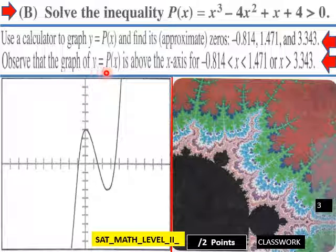Observe that the graph of y = P(x) is above the x-axis for this area here, negative 0.814 and 1.471. In this area here it's above, goes below, then it goes above again, or x > 3.343, which is up here. That'd be one way to find or state the characteristics.